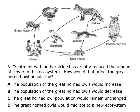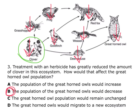Question 3: Treatment with an herbicide has greatly reduced the amount of clover. How would that affect the great horned owl population? Great horned owls don't directly eat clover, but we can follow the pattern. In front does the same, so the deer mouse population would decline, and since the owls are in front of the deer mouse, the great horned owl population would also decline. The correct answer is B. Notice that no matter what path you go down, everything is in front of the clover — the producer — which means it would all do the same.